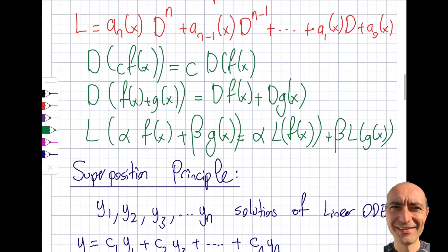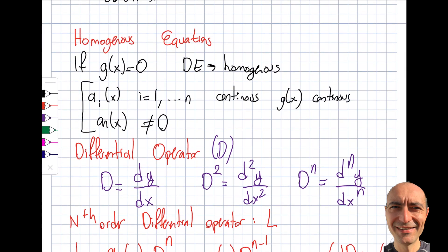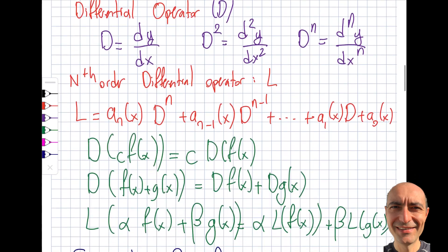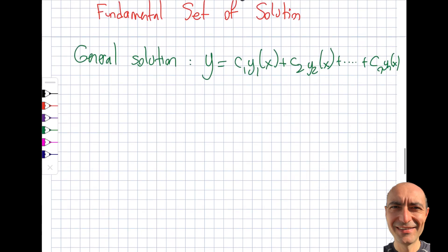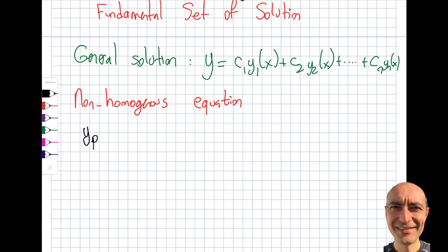So far I've been focusing on the homogeneous equation, where g(x) = 0. Now I want to look at the non-homogeneous case. If I have a function yp — p stands for particular — that satisfies the non-homogeneous equation, it is called a particular solution.